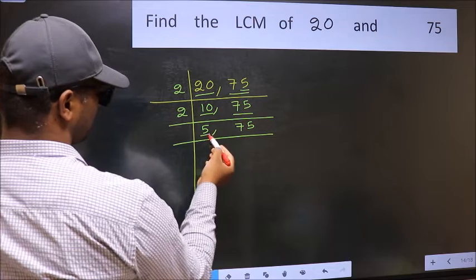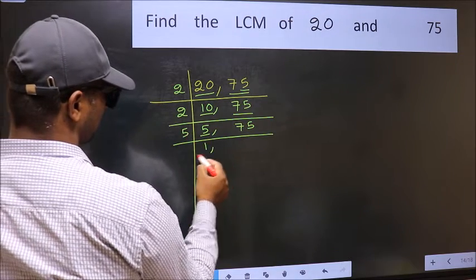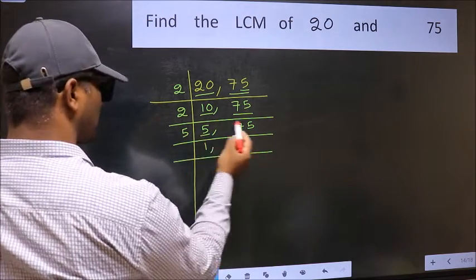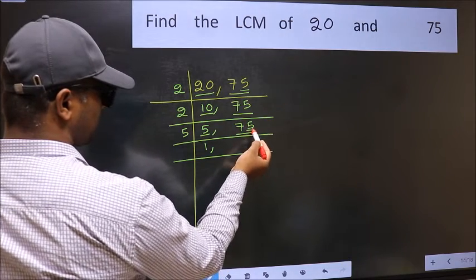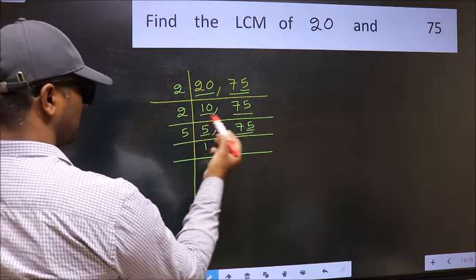Now here we have 5. 5 is a prime number. So 5 once 5. The other number 75, last digit is 5. So this number is divisible by 5.